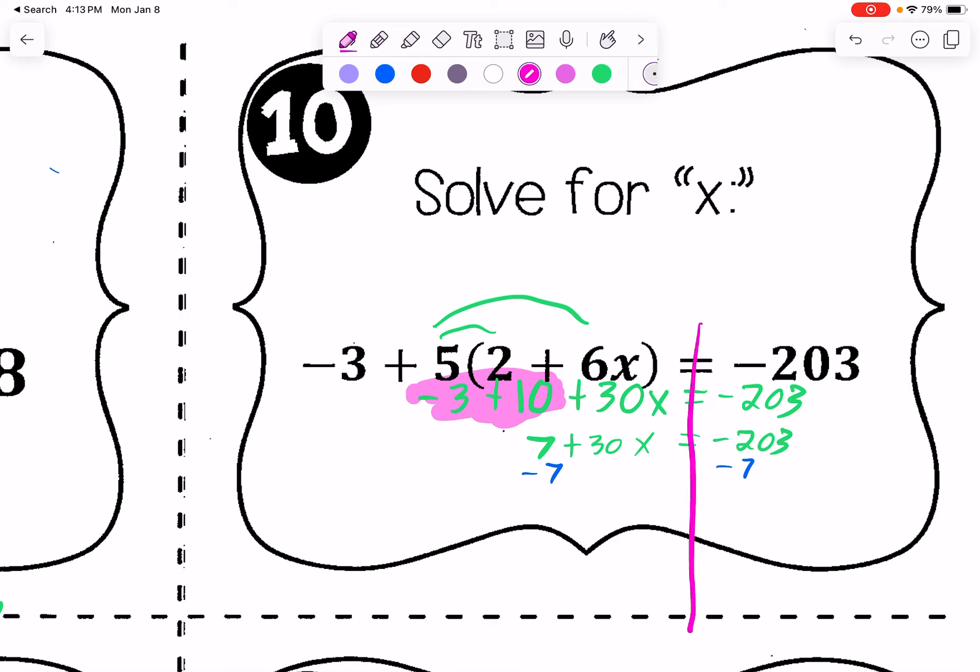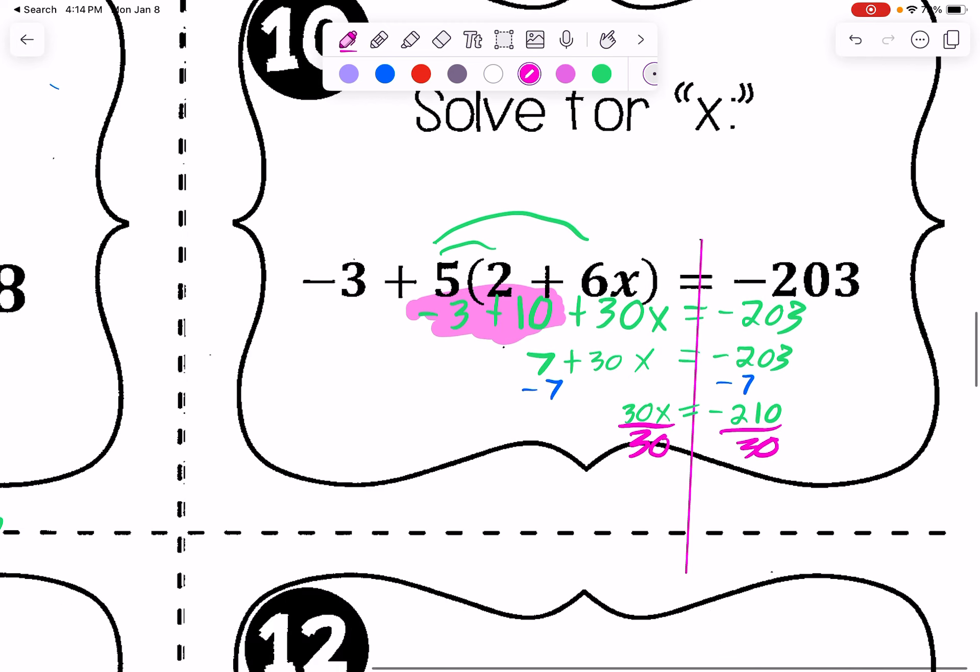Then we will subtract 7 on both sides to get the x's all by themselves. And then we're left with 30x equals negative 210. The last step is to divide both sides of the equation by 30. We get x equals negative 7. When you do 210 divided by 30, you get negative 7.